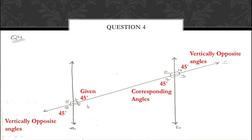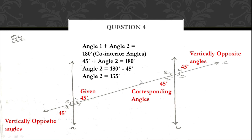Now for the remaining angles: angle 1 and angle 2 are co-interior angles on the same side of the transversal in the interior region, so their sum = 180°. Equation: angle 1 + angle 2 = 180°. Since angle 1 = 45°, we get angle 2 = 180 − 45 = 135°. Then angle 3 = 135° because angles 2 and 3 are vertically opposite angles.